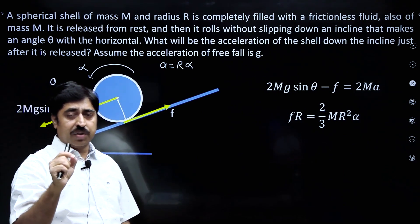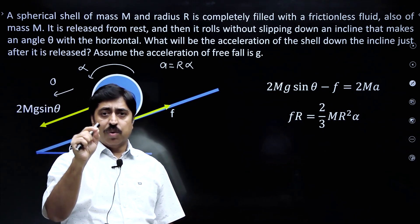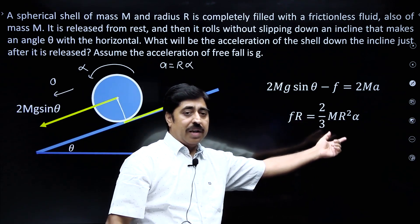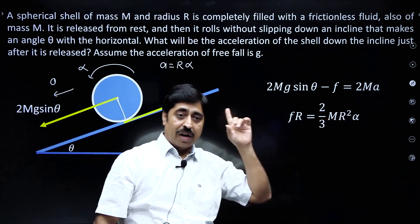The moment of inertia of this spherical shell about any diameter is 2/3 mR². So the torque equation is: F·R = (2/3)mR²·α.